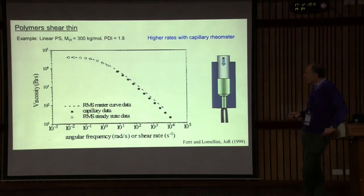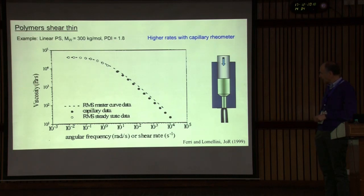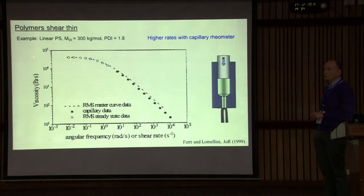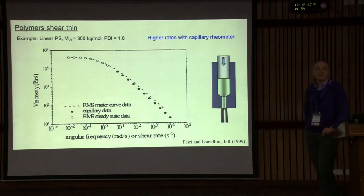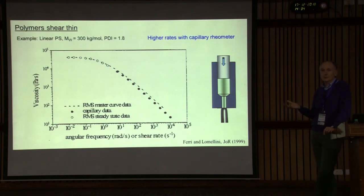What you see is the viscosity as a function of the shear rate, or equivalently the dynamic viscosity as a function of angular frequency. At low rates, you have the Newtonian plateau, and then at high rates you have shear thinning. This is particularly important because the viscosity drops for several decades, and that's why polymers can be processed easily. To obtain the high shear data, you need to use a capillary rheometer, which is the simplest example of a processing device.